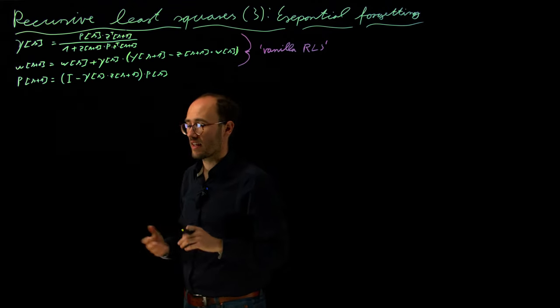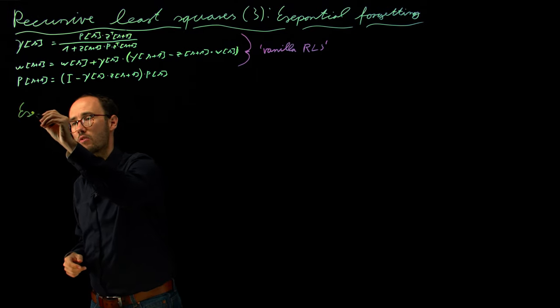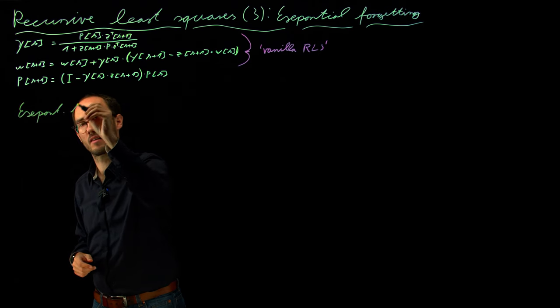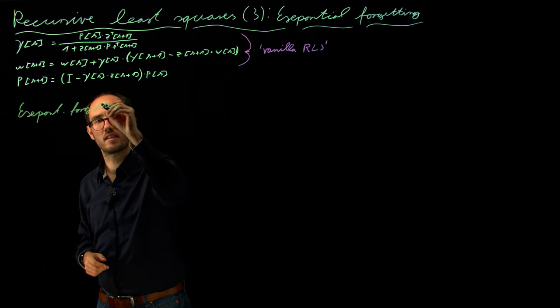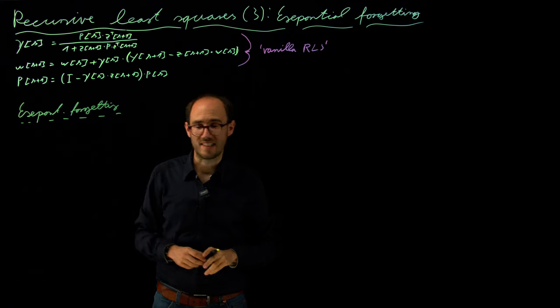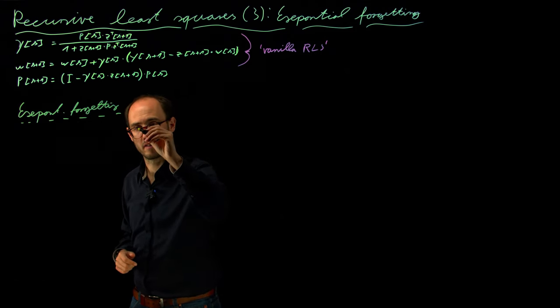In order to take that into account, what we basically introduce in this video is the so-called exponential forgetting, and the exponential forgetting is basically an introduction of the weighted least squares estimator, which we have already introduced previously. The idea here is quite simple.